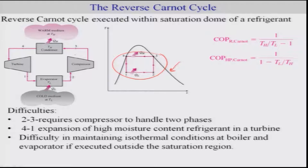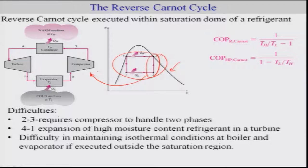There are certain problems, almost similar to those observed in the vapor power cycle. For the compression process, if you operate your Carnot cycle within the saturated dome of the refrigerant, you have to worry about handling the two-phase system within the compressor — that is one aspect of the problem. The other aspect is that the turbine has difficulty expanding mixtures, which would be the case for the 4-to-1 expansion with high moisture content.